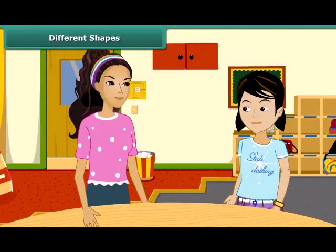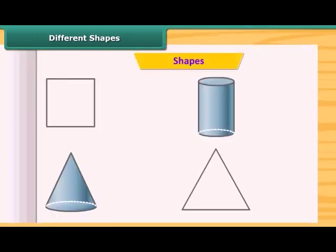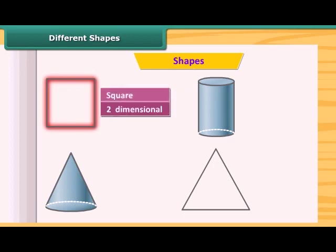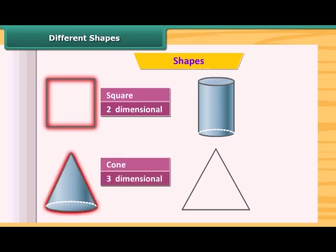Rita, let's play a game now. You know about the two-dimensional and the three-dimensional shapes. I will show you some shapes and you will tell me their name and their type. Okay, I am ready. These are all the shapes. This is a square and this is two-dimensional. This is a cone and is three-dimensional.